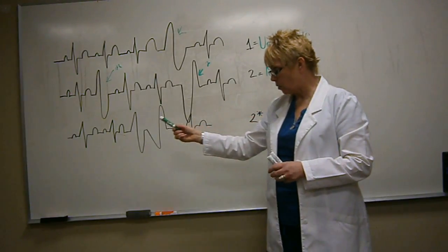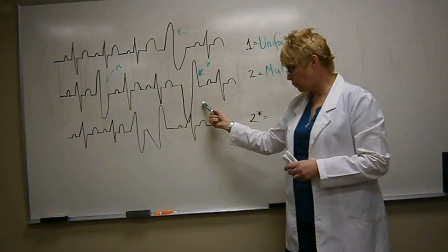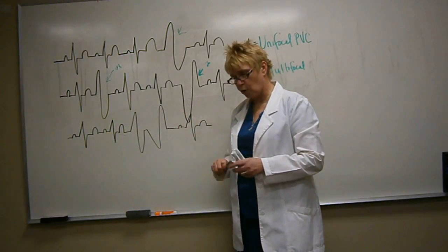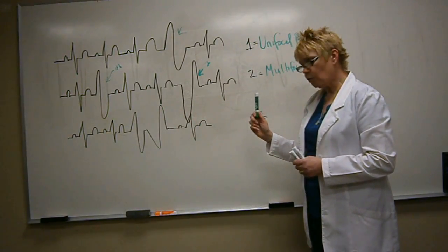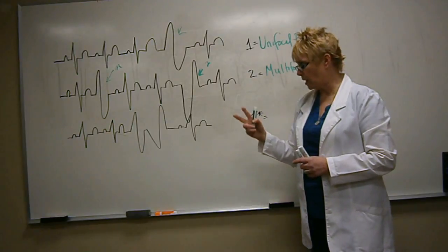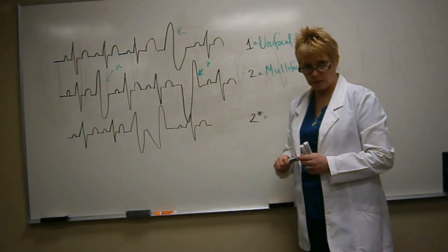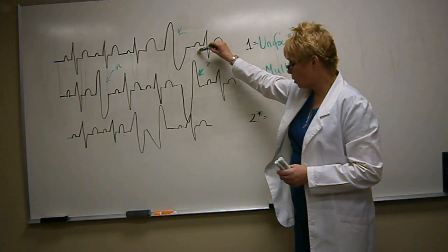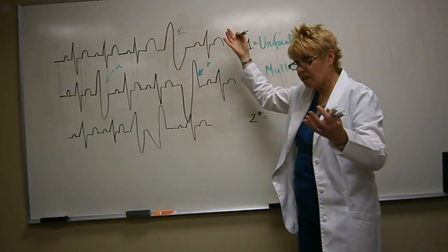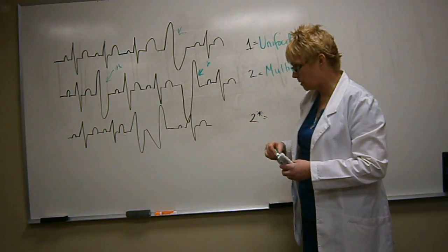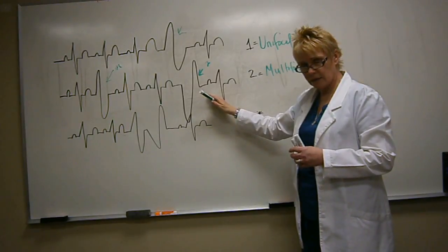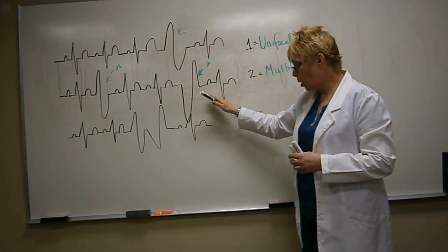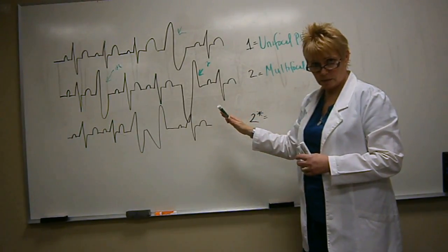But when you have two different waveform morphologies on your PVCs, you now have to begin to worry that you have two areas of ectopy in the heart. This waveform, this strip up here, is sinus rhythm with a unifocal PVC, but now I have a sinus rhythm with multifocal PVCs.